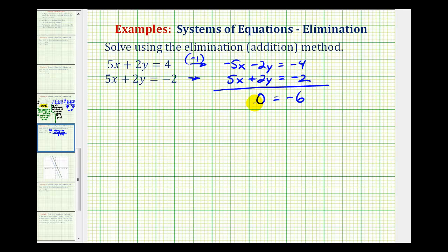It's based on whether this equation is true or not. Here we have zero equals negative six. That's obviously false. Zero does not equal negative six. Since this result is false, the system has no solution.